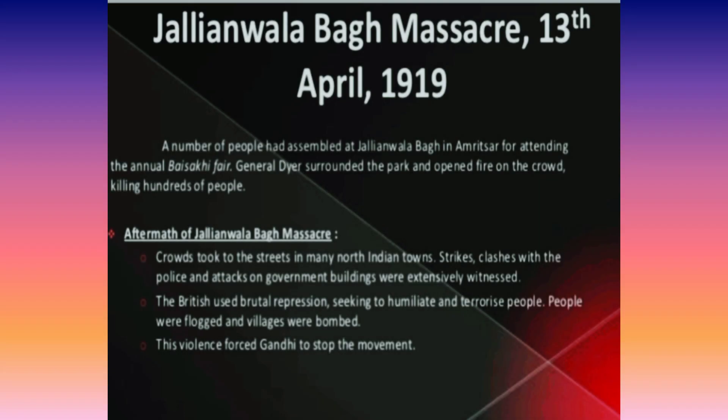On 13th April 1919, the infamous Jallianwala Bagh incident took place. A number of people had assembled at Jallianwala Bagh in Amritsar to attend the annual Baisakhi fair, and some had also gathered to protest against the government's repressive measures. General Dyer, who had already taken command under martial law, surrounded the park, opened fire on the crowd, and killed hundreds of people.